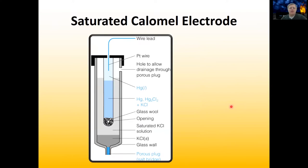Another electrode we often use is called the saturated calomel electrode. This is very similar to the saturated silver chloride electrode — the only difference is that instead of using silver chloride, we're actually using mercury and chloride. This has liquid mercury in a test tube with a little bit of glass wool at the bottom. The glass wool will not let the mercury diffuse through it, but it will let potassium chloride solution from outside diffuse into it.